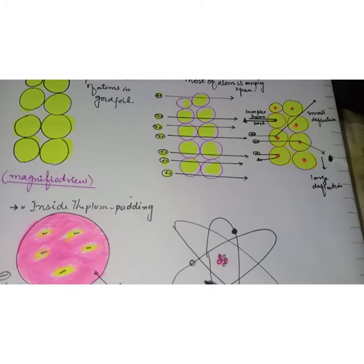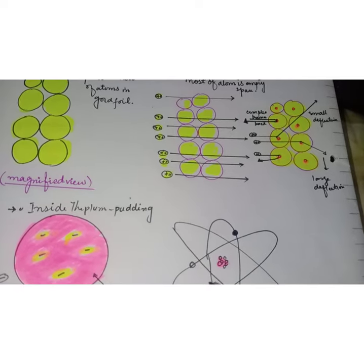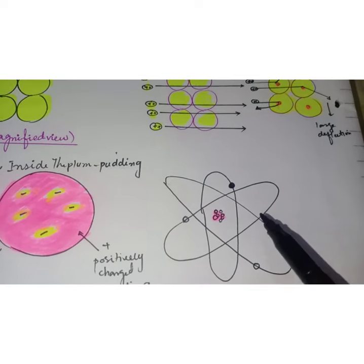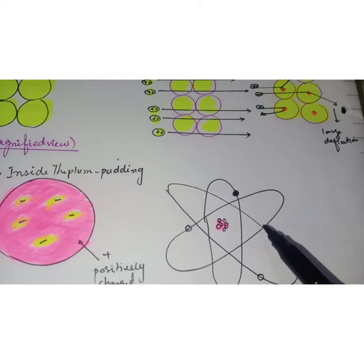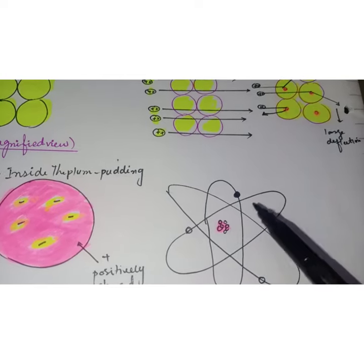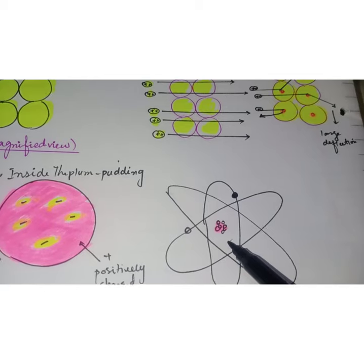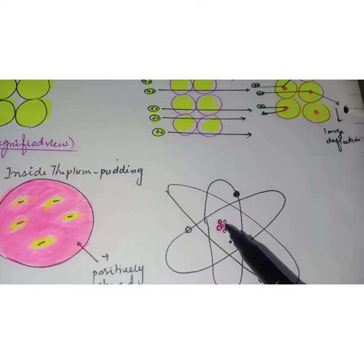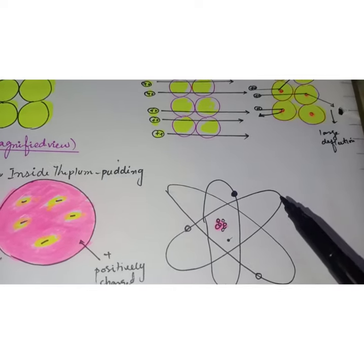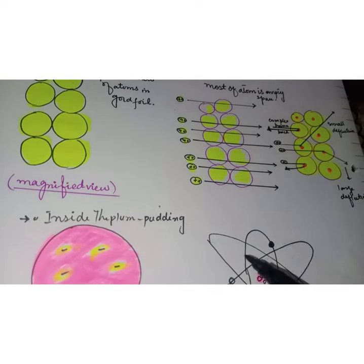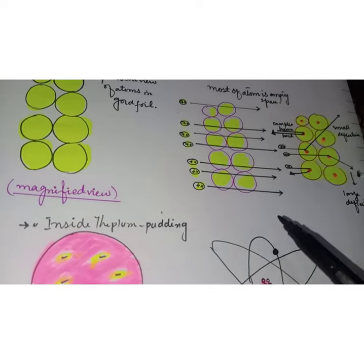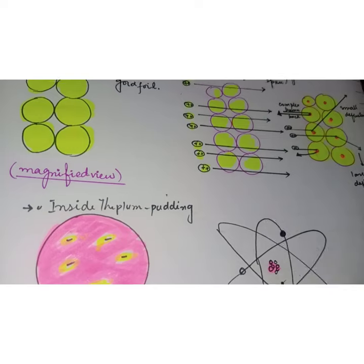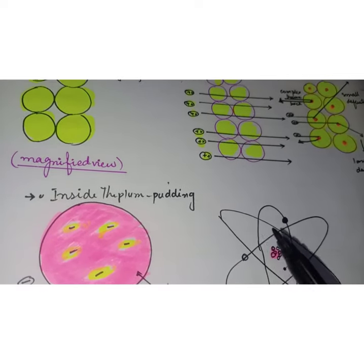Although Rutherford's experiment proved that the plum pudding model was not correct, yet it had some defects. According to classical theory of radiations, electrons being charged particles should release energy continuously and ultimately fall into the nucleus and the atom would collapse. Also, if electrons emit energy continuously they should form a continuous spectrum, but in fact they were getting a line spectrum. Based wholly on classical physics, the Rutherford model was superseded in a few years by the Bohr atomic model which incorporated some early quantum theories.